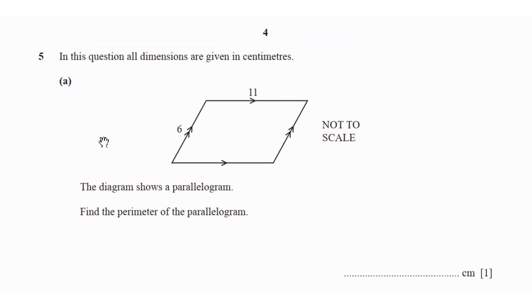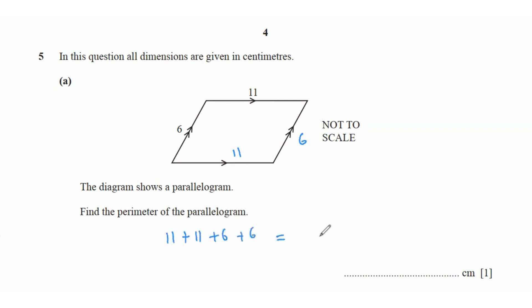Question 5: in this question, all dimensions are given in centimetres. The diagram shows a parallelogram — find the perimeter. In a parallelogram, opposite sides are equal. So this is 11 and 11, and 6 and 6. So 11 + 11 + 6 + 6 equals 34 centimetres.